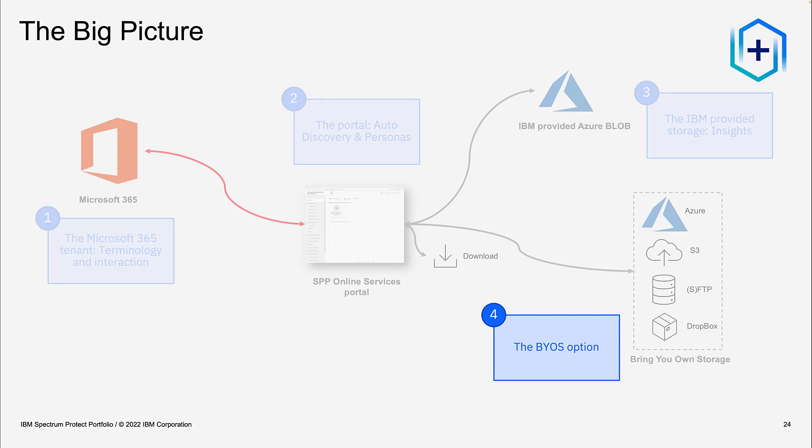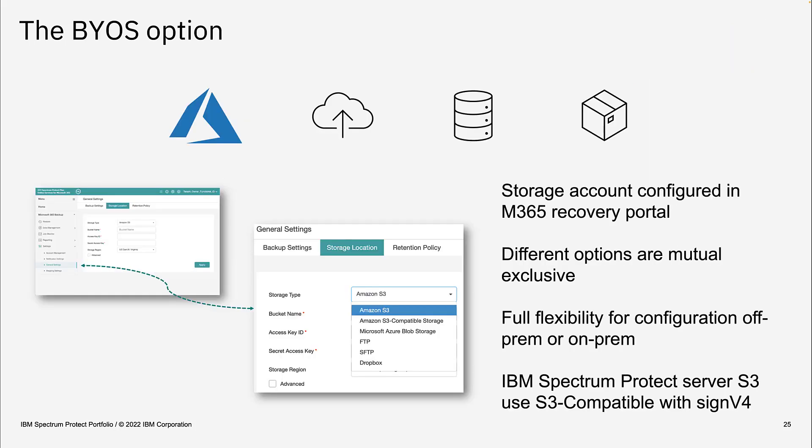Finally, let's look at the Bring Your Own Storage option. If the customer decides to use it, the IBM DevOps team has the ability to switch the customer. If they previously used IBM Storage and are now switched to Bring Your Own Storage, the backup data in IBM Storage is no longer valid because the different storage options are mutually exclusive — the SPP Online Service Portal can connect to just one storage option at a time.